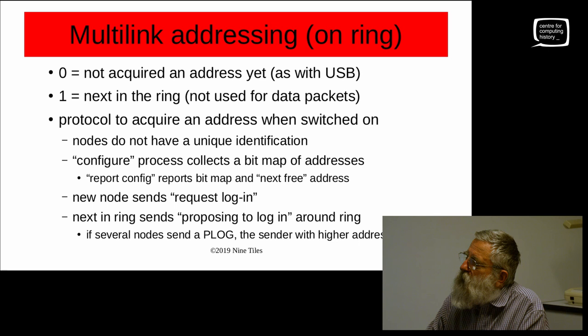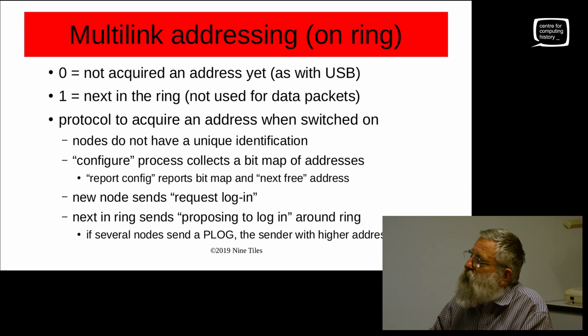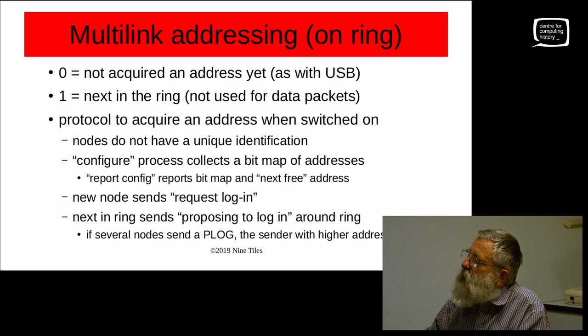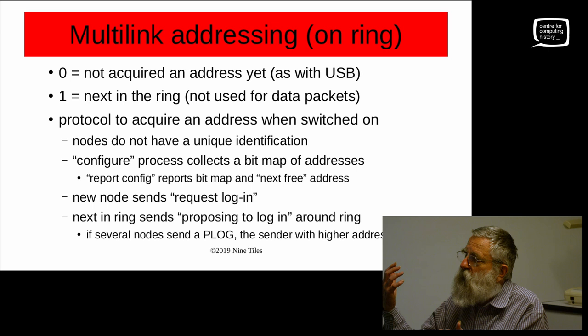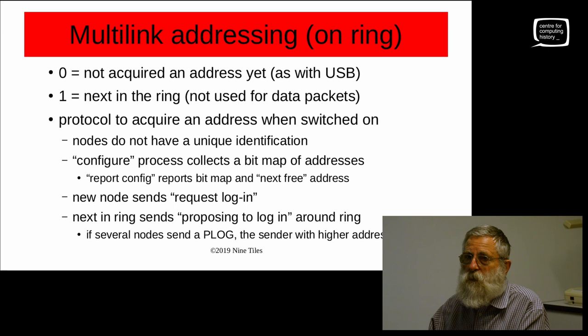The checksums in the middle shows we assembled packets in a buffer and then sent them, whereas these days you tend to calculate checksums on the fly as they're going out, but that needed logic which was expensive then. When something first switches on it's not quite an address, so it has address zero — if you send a packet to address zero that will get to the first thing on the ring that hasn't got an address yet. There's quite a protocol to cope with two or three things turning up at once, and to cope with the entire system being on a circuit breaker where someone turns the power on and they all come up almost at once.